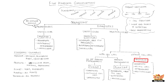Organisms under kingdom Animalia are multicellular, but their cells do not have cell walls. They are heterotrophs. All animals and birds, including human beings, are classified under kingdom Animalia.